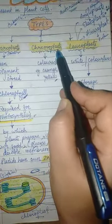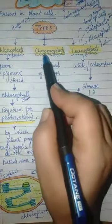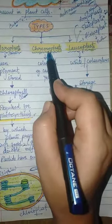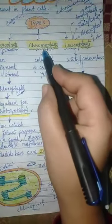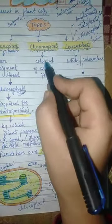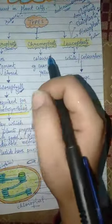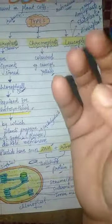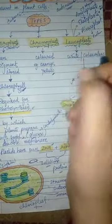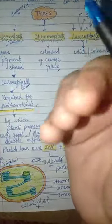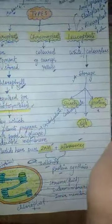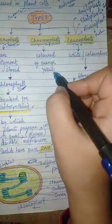Next is chromoplast. 'Chromo' means color — colors other than green. Chromoplast stores color pigments and imparts colors to fruits and vegetables. For example, carrots are reddish-orange in color due to the presence of red and orange pigments stored in the chromoplast. Different types of pigments are stored in chromoplast.